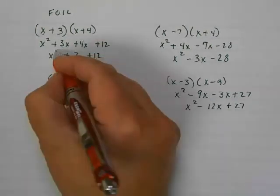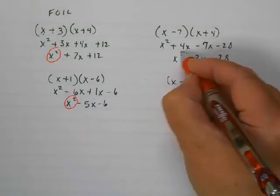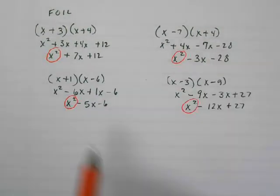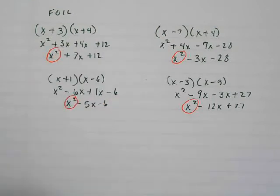You probably noticed every single one of these problems started with an x squared. Because anytime you have x plus something or minus something and you're multiplying together, the first term always ends up as x squared.